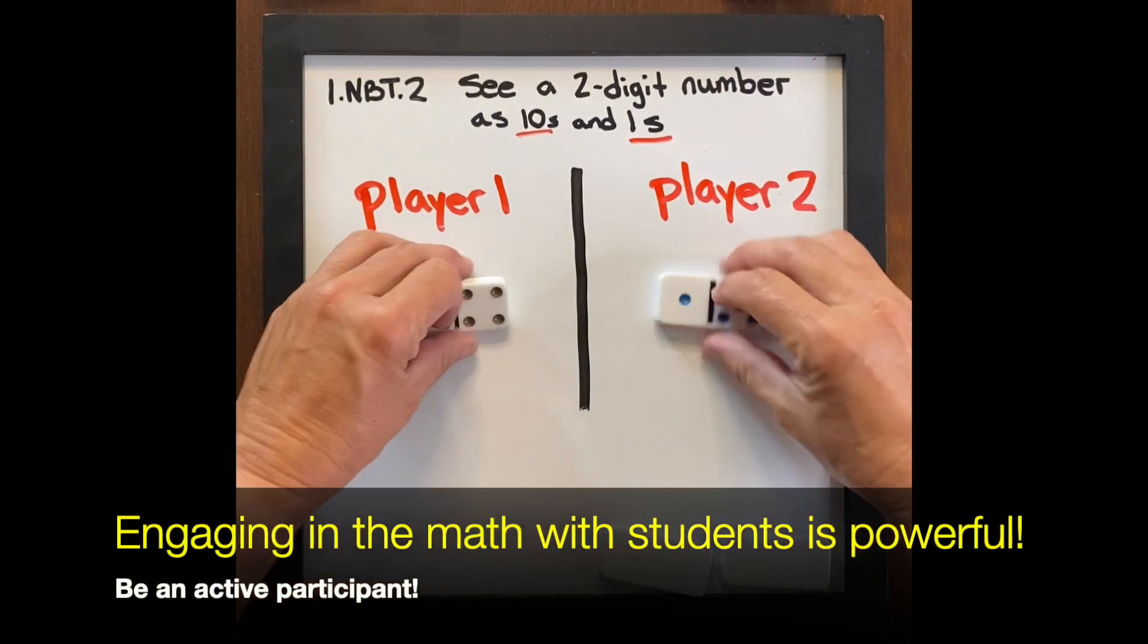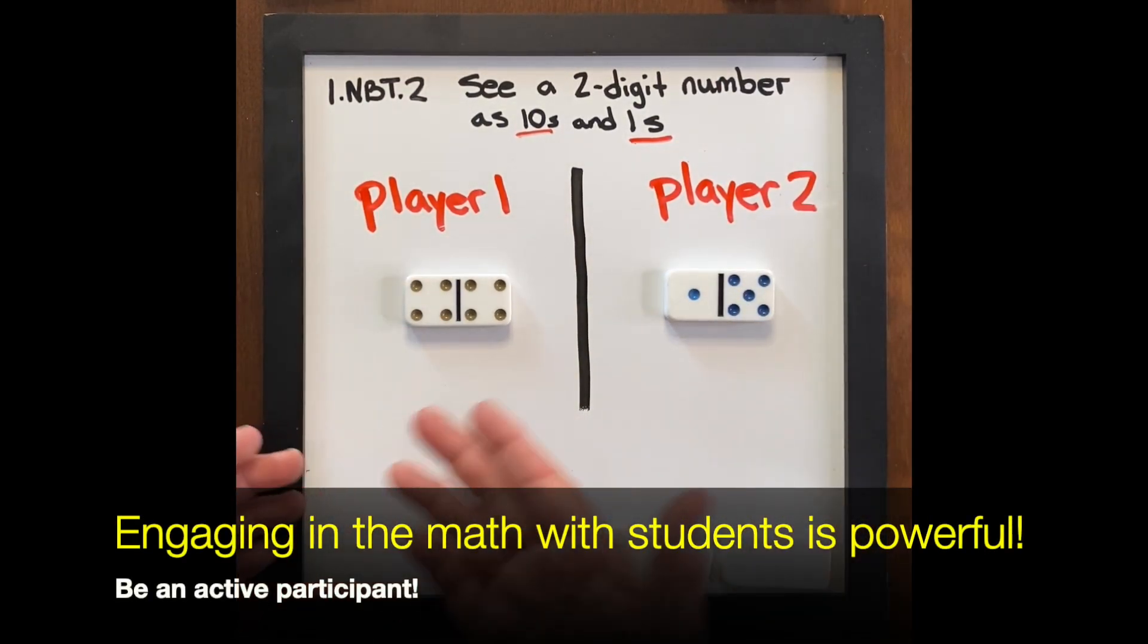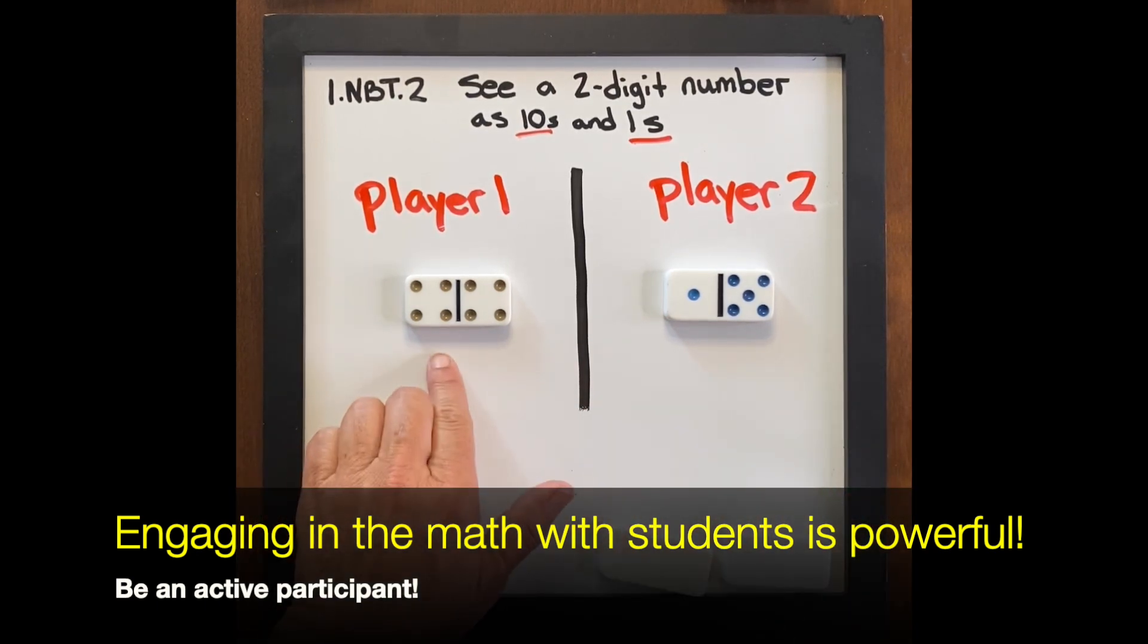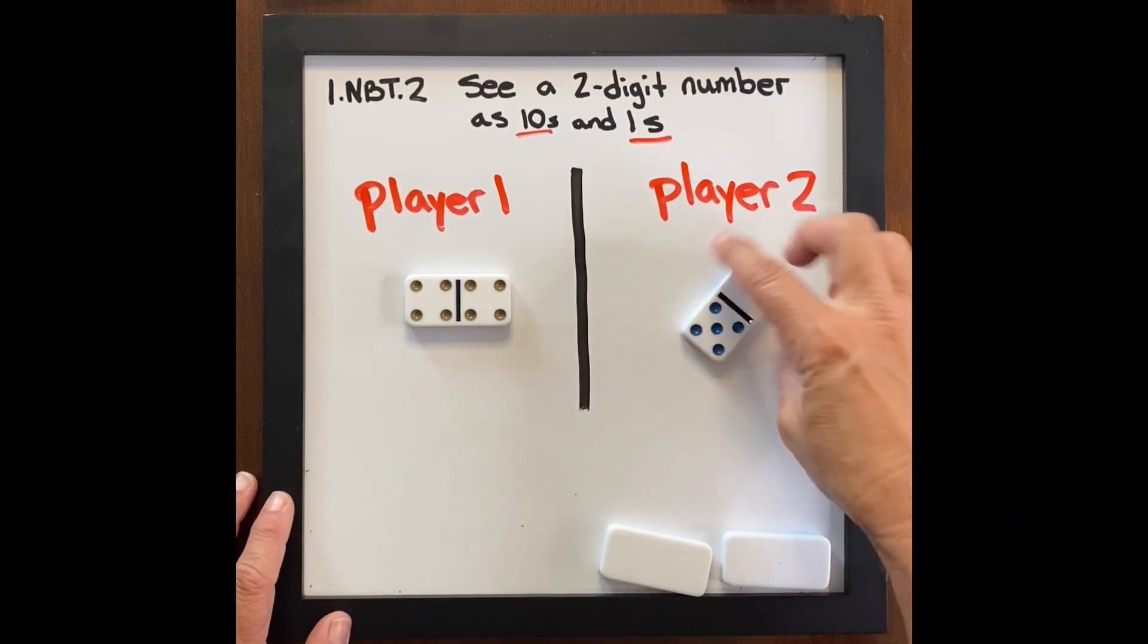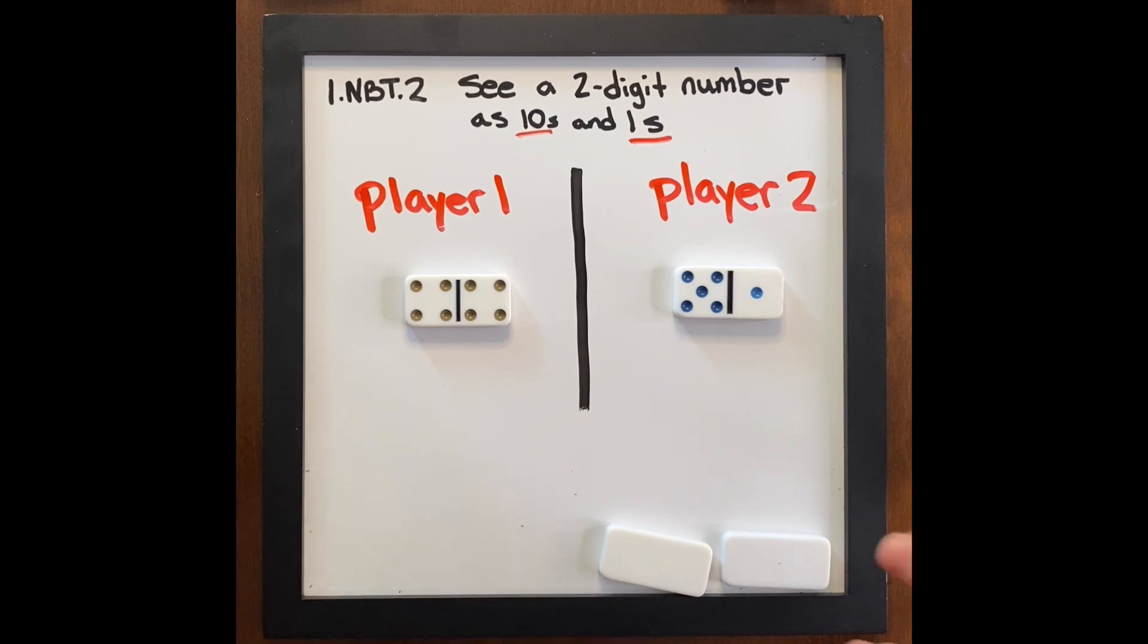Now this allows the teacher to walk around the room and see what's going on and ask them, what is your number? How many tens do you have? How many ones do you have? Or can you tell me that number in tens and ones? Why are you choosing one ten five? Or why are you choosing five tens one? Not in an accusatory way that they're right or wrong. It's I'm just understanding.